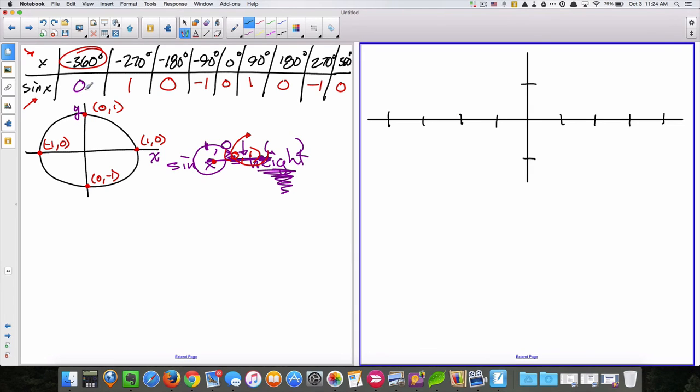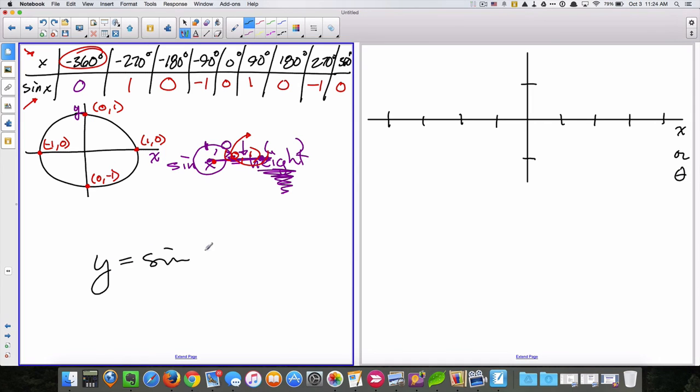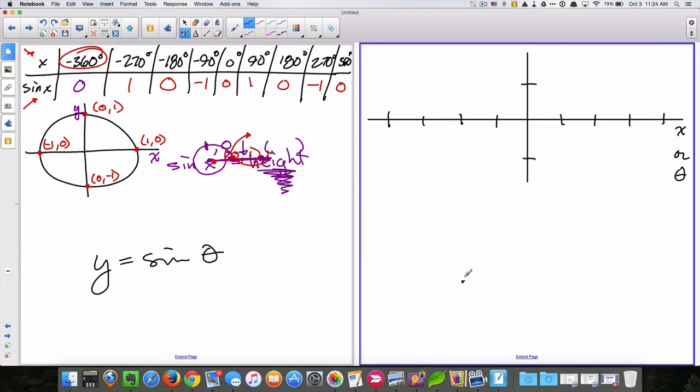So we're going to plot the point, negative 360 for x. But these are angle measures, so you can either put theta or you can put x or theta. And then negative 360 is back this way. This is going to be zero, both in the x and y. This is going to be one and that's going to be negative one. And this is going to be 90, this is going to be 180, 270, and 360.